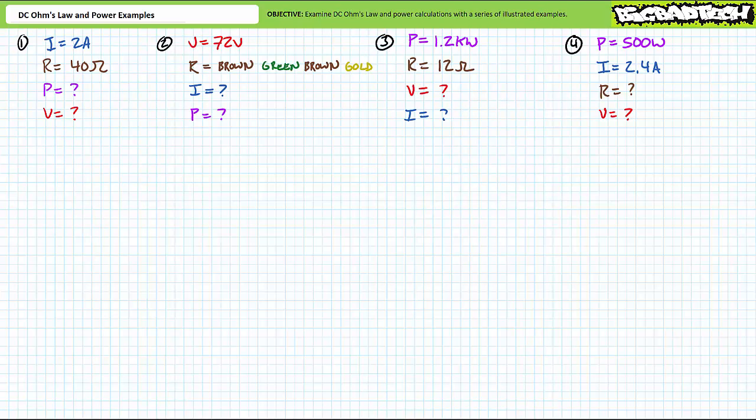Your method of choice may differ from mine, but our answer should be the same. Since this could get chaotic rather quickly, let's do this in three sets of four problems each. Here's the first set of four problems. Given known values for each scenario, see if you can solve for the other two unknown values using the most efficient and direct means possible. While you're there, see if you can use another algebraic permutation of either DC Ohm's Law or the power equations to check your work.